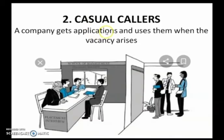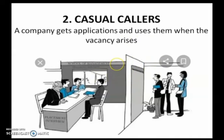Next is casual callers. A company gets applications and uses them when a vacancy arises. Whenever an advertisement is given, the company receives a number of applications and bio-datas. They select one or two as per requirements to fill the vacancies and keep aside the remaining bio-datas for future reference. Whenever they need more staff or there are more vacancies, they will call from this list of applicants kept aside. This comes under external sources of recruitment.